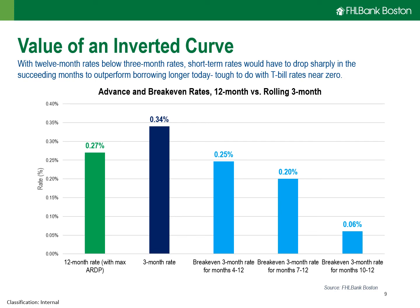Regarding the inverted yield curve: when looking at the advance curve inside of one year, the lowest nominal rates are at the 12-month mark, in comparison to overnight rates as well as one- and three-month terms. This presents a bit of relative value in extending out to the 12-month term in terms of producing the lowest total interest cost over a horizon of one year. We're looking at break-even rates for a strategy of rolling three-month advances for one year versus borrowing for the full 12-month term upfront and taking advantage of that inverted yield curve.